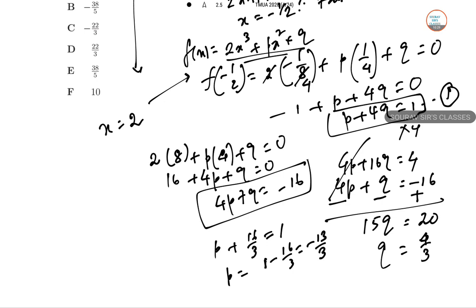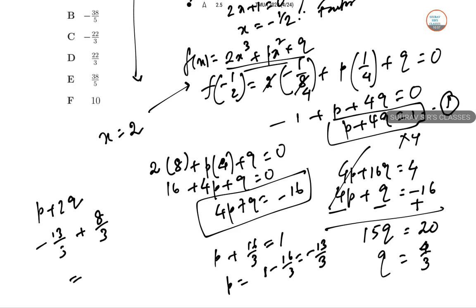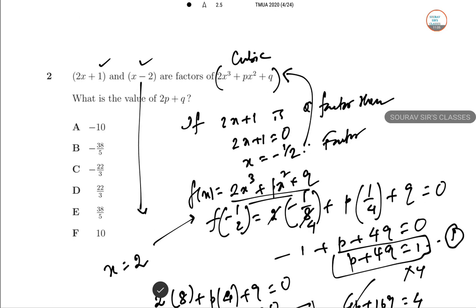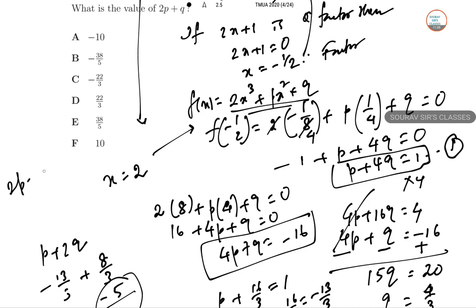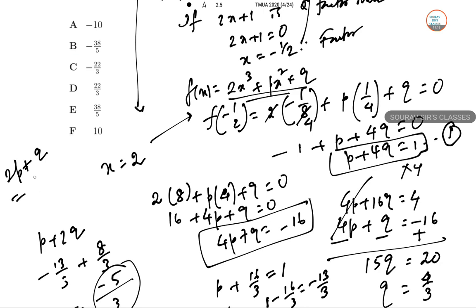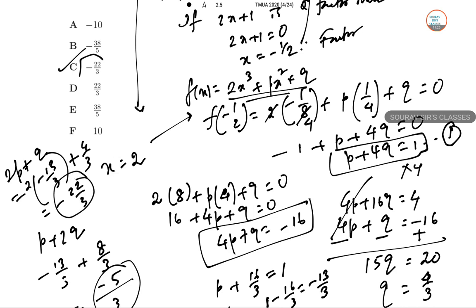So P equals minus 13/3 and Q equals 4/3. The question asks for 2P plus Q: 2 times (minus 13/3) plus 4/3 equals minus 26/3 plus 4/3 equals minus 22/3. Therefore option C is the correct answer.